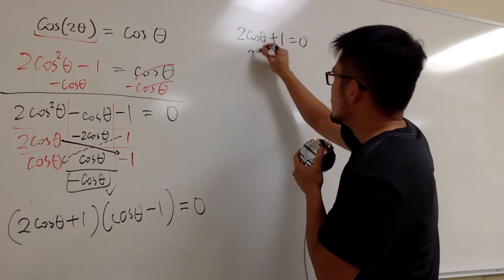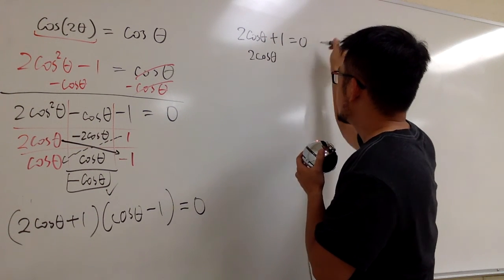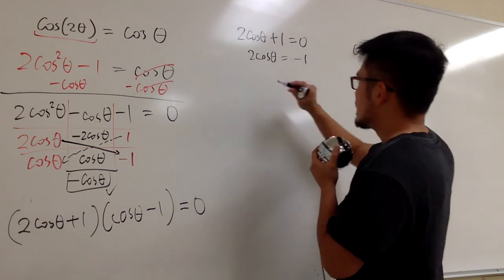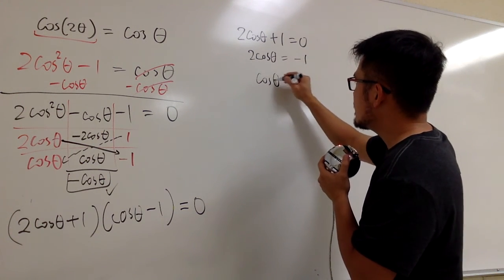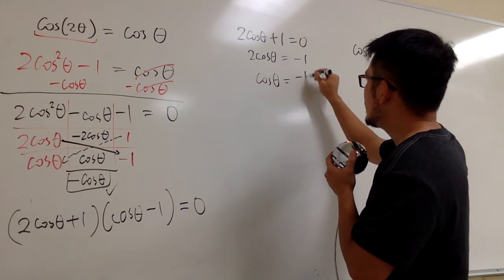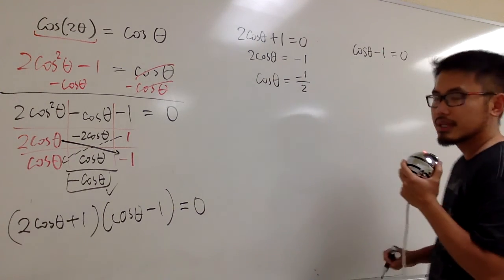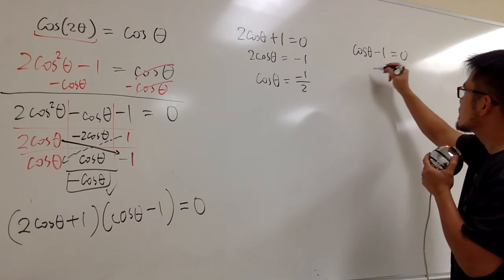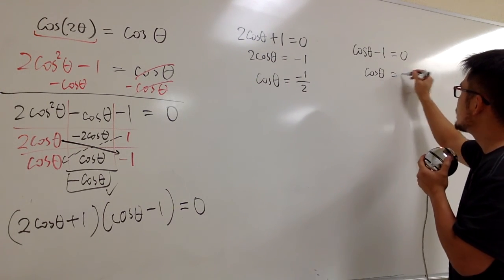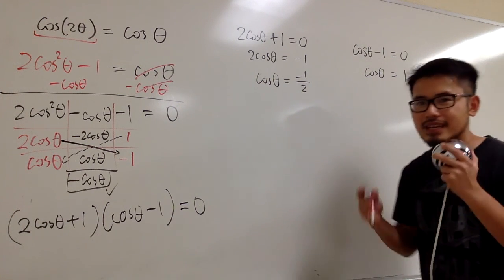Okay, let's do this real quick. This is 2 cosine θ. Subtract 1 on both sides. So, we have minus 1 like this. Divide both sides by 2. We are talking about cosine θ is equal to negative 1 over 2, right? On the other hand, add 1 on both sides. We have cosine θ is equal to positive 1.